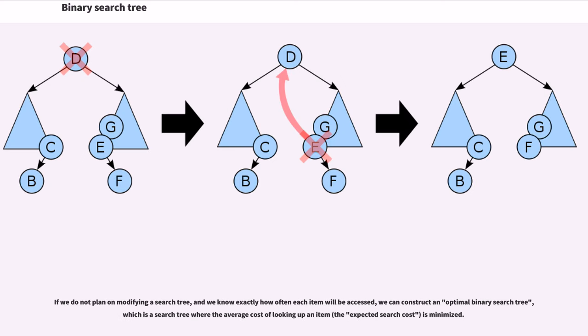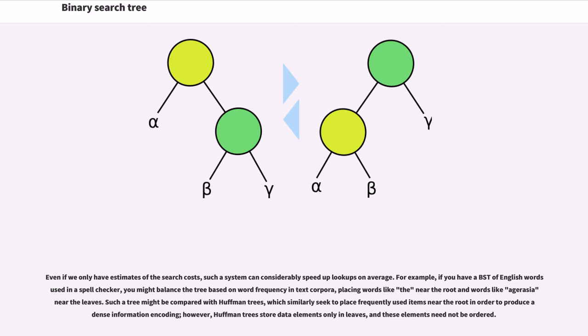If we do not plan on modifying a search tree and we know exactly how often each item will be accessed, we can construct an optimal binary search tree, which is a search tree where the average cost of looking up an item, the expected search cost, is minimized. Even if we only have estimates of the search costs, such a system can considerably speed up lookups on average. For example, if you have a BST of English words for a spell checker, you might balance the tree based on word frequency in text corpora, placing words like 'the' near the root and words like 'aderation' near the leaves. Such a tree might be compared with Huffman trees, which similarly seek to place frequently used items near the root in order to produce a dense information encoding. However, Huffman trees store data elements only in leaves, and these elements need not be ordered.